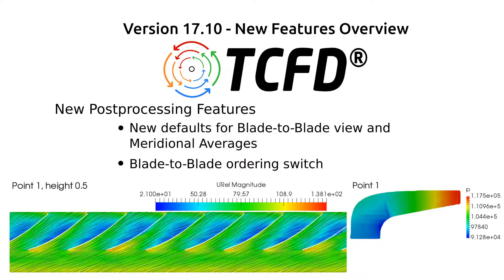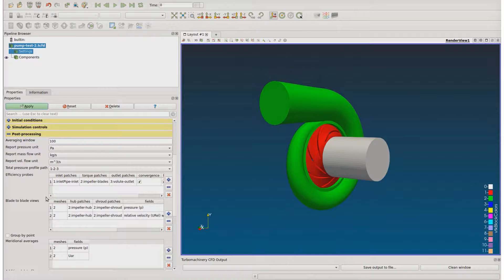New post-processing features. There are new defaults for post-processing setup that save time in the case setup phase. There is a predefined setup for blade-to-blade views at mid-span, which works automatically when hub and shroud are properly defined. And also a predefined setup for meridional averages, which works automatically when the rotating region is properly defined. There is also a new blade-to-blade view ordering switch — you can now distinguish whether the order of figures is according to spans or according to speed line points.